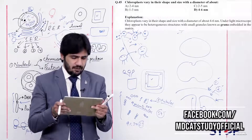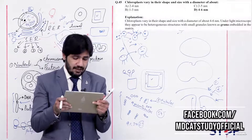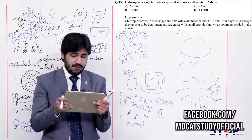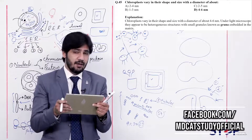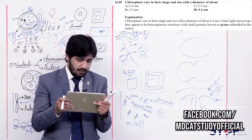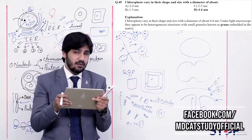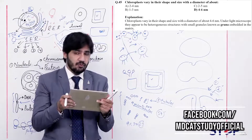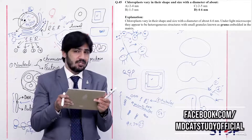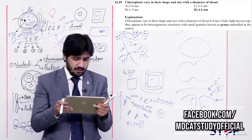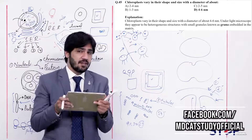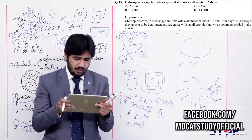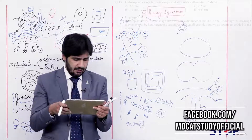Question 45: Chloroplasts vary in their shape and size with a diameter of about (alpha) 2–4 nm, (beta) 1–3 nm, (charlie) 2–5 nm, (delta) 4–6 nm. Chloroplasts vary from 4–6 nanometers. So the right answer is delta.